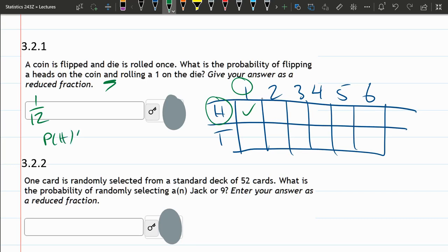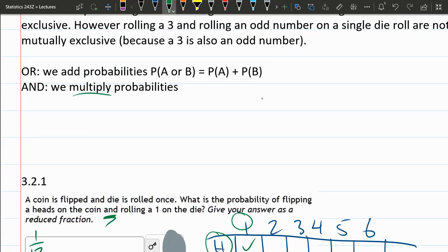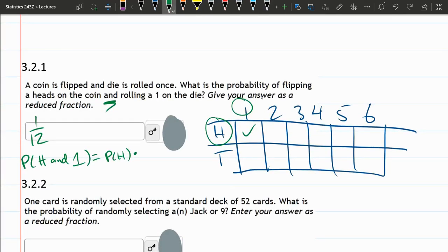Probability of heads and rolling a 1. They are independent. Whether I roll heads or tails does not affect rolling a 1 or not rolling a 1. So this is probability of heads multiplied by probability of a 1. This is multiplication. Multiply probabilities.